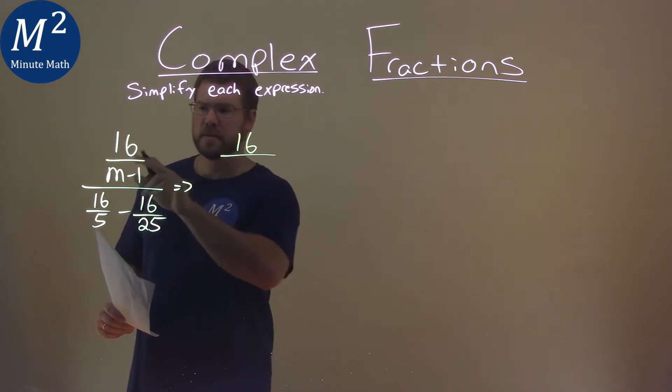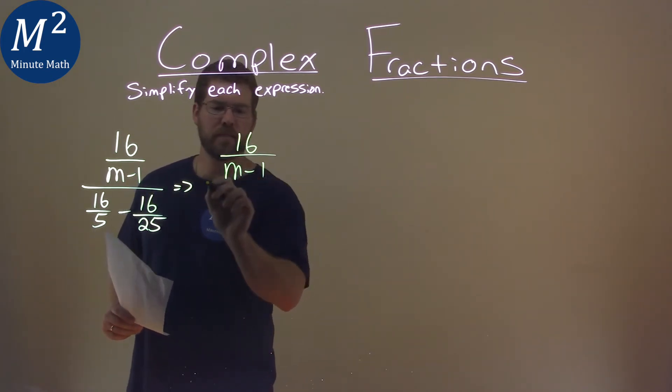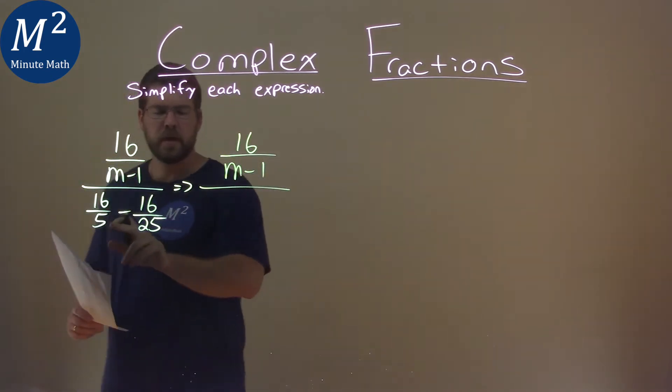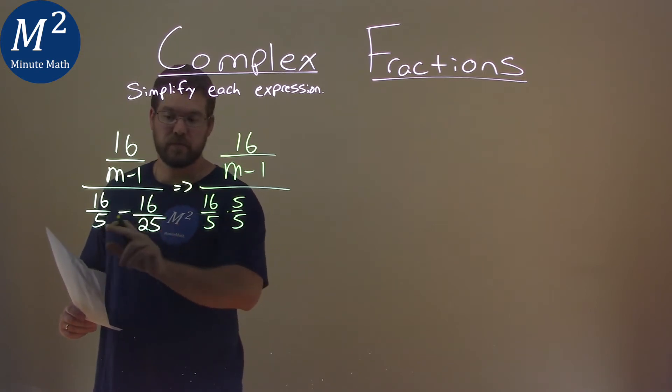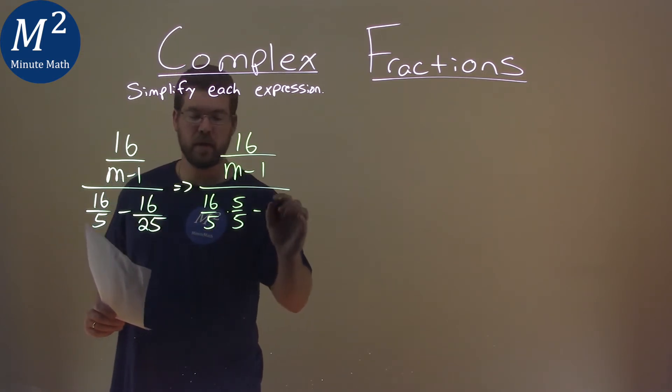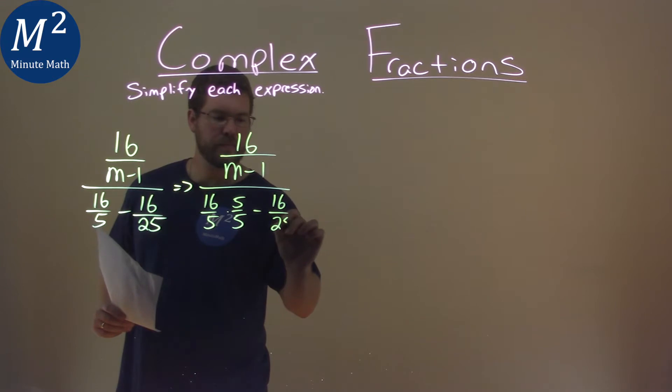So I'm rebranding my steps here: 16 over m minus 1, all over, if I take that 16 over 5 and multiply it by 5 over 5, my denominator will be 25. 5 times 5 is 25. Keep the other part here, 16 over 25.